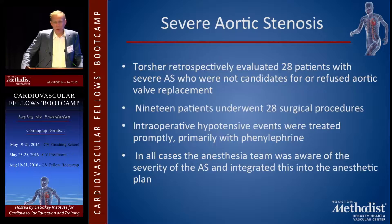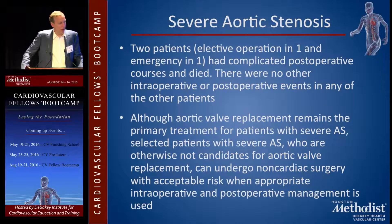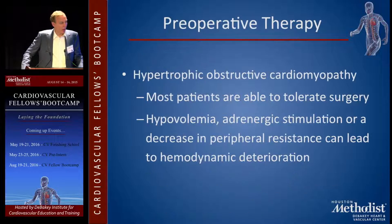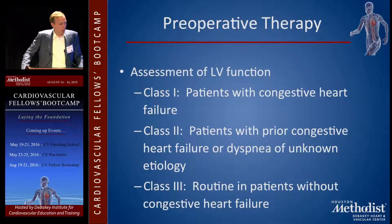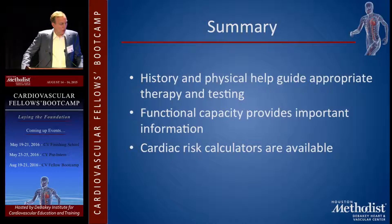Valvular heart disease: you can operate on somebody with severe aortic stenosis — tell the anesthesiologist to be very careful, they may not make it through but probably will. Mitral stenosis carries risk of heart failure but you can probably make it through. Aortic and mitral regurgitation — you can probably make it through. HCM — avoid hypotension and anemia, as those worsen dynamic outflow tract obstruction. If you have heart failure, you should obviously do an echo. If they had prior heart failure, it's reasonable to do an echo. And you should always do EKGs.